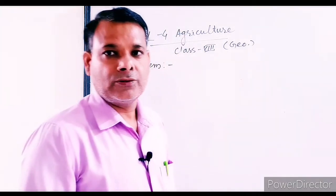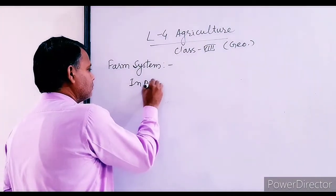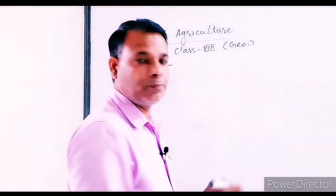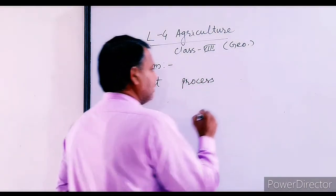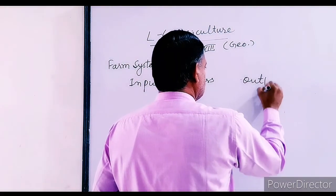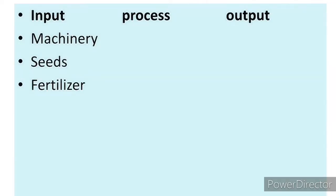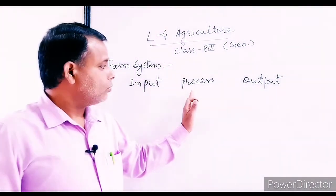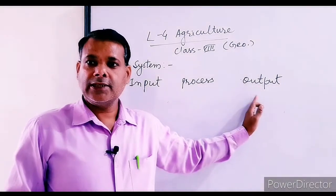To summarize how it works: we take inputs, process them, and then get an output. For example, machinery, seeds, and fertilizer are used as inputs, then all is processed, and we get crops as an output.